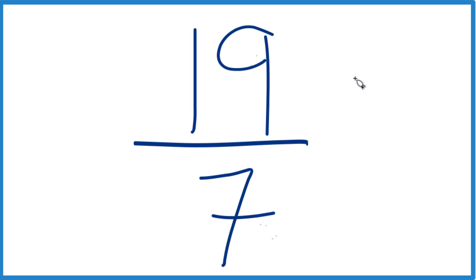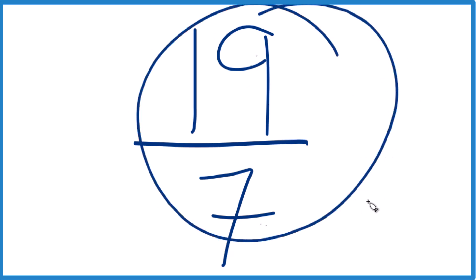So 19 divided by 1, 7 divided by 1, we get 19 sevenths again. So this is already simplified. We can't reduce this any further.